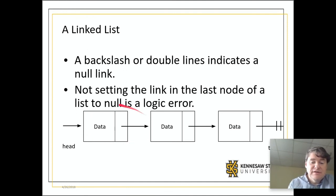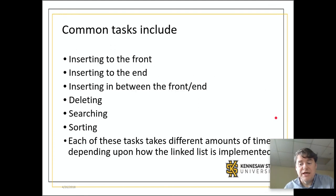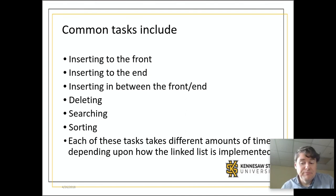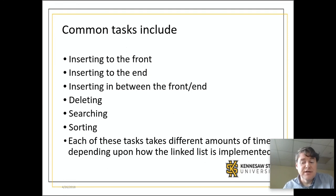To review: a node contains a data field of any type and a next link to the next node. You need a link at the beginning to get you to the first node, and null at the end to specify you've reached the end. Once you have this structure, there are several things you might want to do: insert a node at the beginning, end, or middle of the list; delete a node; search the list; or sort it. Each operation takes a different amount of time.